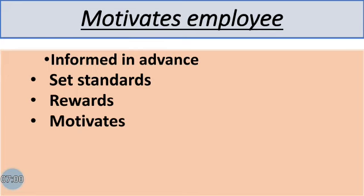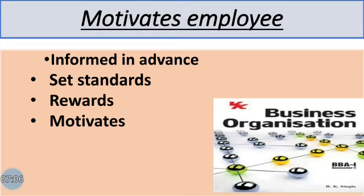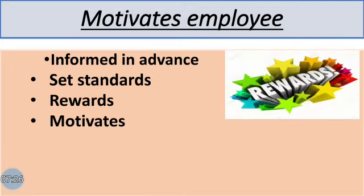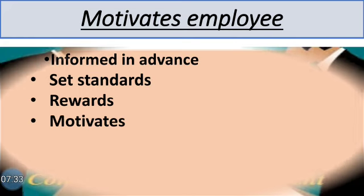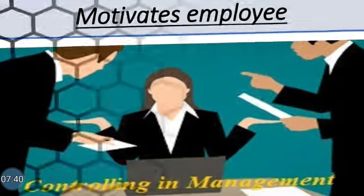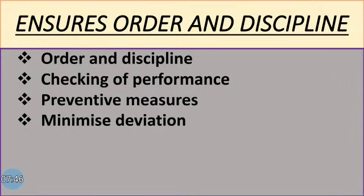Controlling also motivates employees. Ideally, employees should be informed in advance about what they are expected to do and what standards are set by the organization. They should also know that once organizational objectives are achieved, they are going to be rewarded — maybe in the form of increment, bonus, promotions, etc. Thus, control motivates employees to perform at their best level.